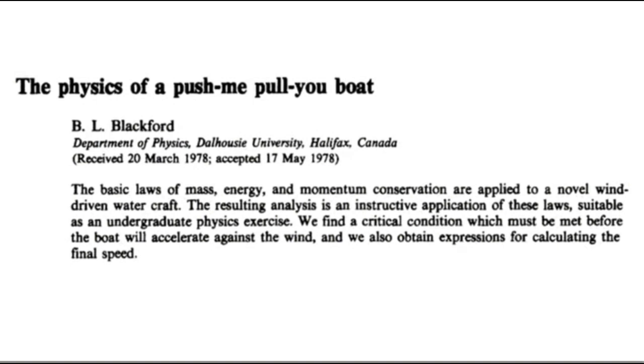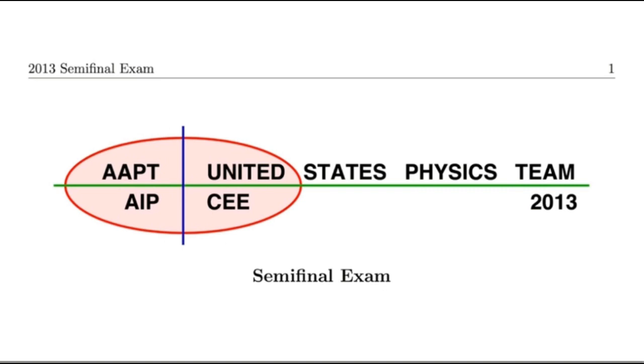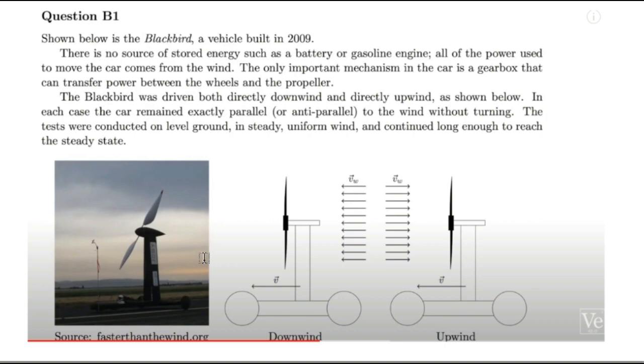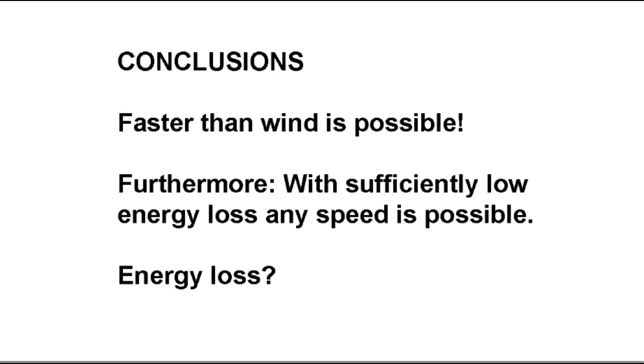In addition to this, as again Veritasium points out, in the 2013 competition with the Olympiad, one of the questions they asked was about this vehicle, the Blackbird, which was built way back in 2009. And they show what the vehicle claims it can do, and they ask, is this possible? And if it's possible, show the physics that shows that it's possible. And of course, they knew what the answer was before they posted this question. And of course, the answer is, faster than wind is possible. Furthermore, with sufficiently low energy loss, any speed is possible.